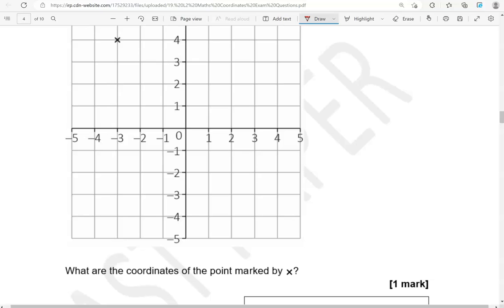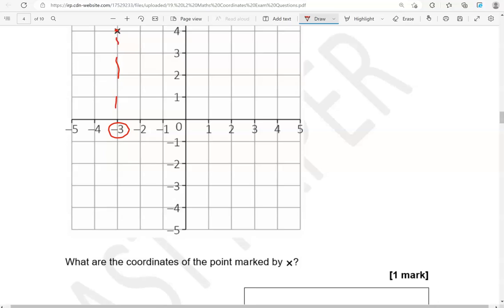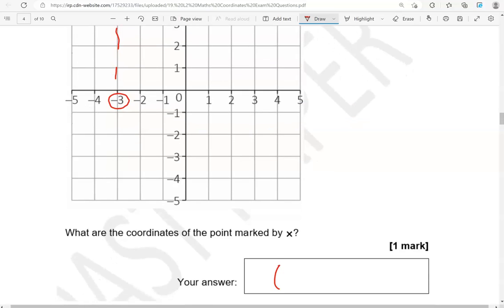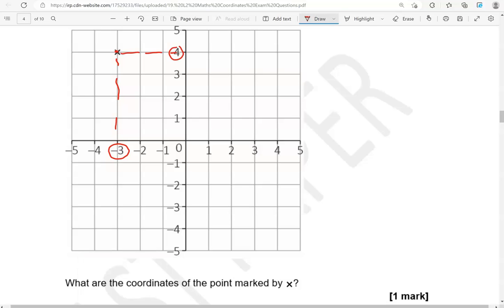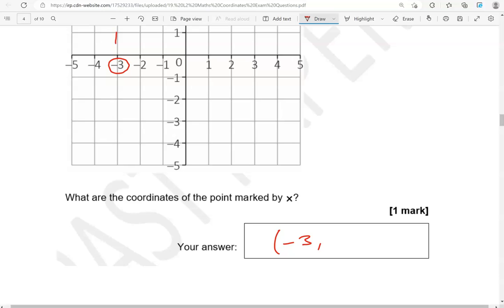Looking at the x-coordinate first. So, horizontally. So, we're going to go down. And that's minus 3, comma, 4. So, minus 3, 4.